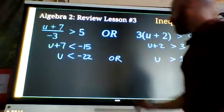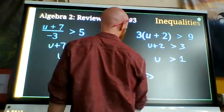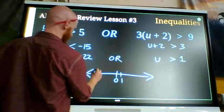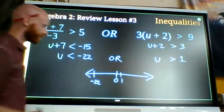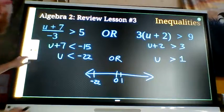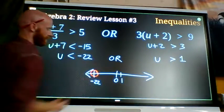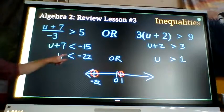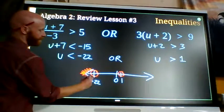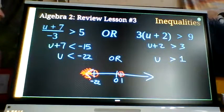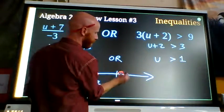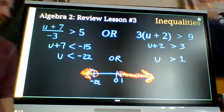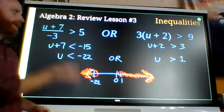I'm gonna graph that on the number line. It will look like this: zero, one, negative 22. I'm not allowed to equal negative 22 so I put an open circle there. I'm not allowed to equal one, put an open circle there. I am allowed to be smaller than negative 22 or I'm allowed to be bigger than one. So there's two sections of values that fulfill that statement.